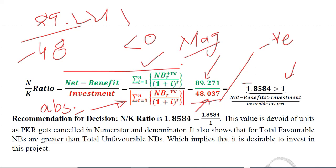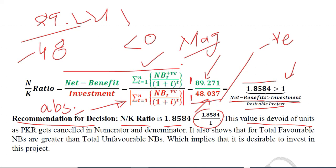The ratio is 1.8584, which is greater than 1, meaning the numerator — net benefits — is greater than the denominator — investment. So the project is a desirable one and we can recommend it. The NBIR is devoid of units since both units cancel out. The total favorable net benefits in green were 89.271, which exceed the total unfavorable net benefits in red of 48.037.